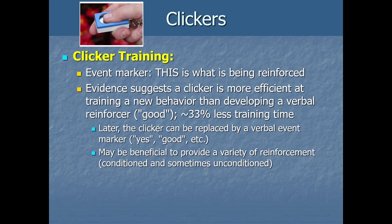Some evidence suggests a clicker is more efficient at training new behaviors than developing a verbal reinforcer like saying 'good' — around 33% less training time to get the same performance in one study. Later, the clicker can be replaced by a verbal event marker like 'yes' or 'good.' It may also be beneficial to provide a variety of reinforcement — some conditioned, some unconditioned, combining clicker and verbal — to keep behavior happening consistently over time.